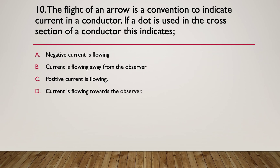Question ten. The flight of an arrow is a convention to indicate current in a conductor. If a dot is used in the cross section of a conductor, what does this indicate? A, negative current is flowing. B, current is flowing away from the observer. C, positive current is flowing. Or D, current is flowing towards the observer. Pause here. Here's the hint. The arrow is an analogy for current. If you think about it, what does it mean if we can see the dot of the arrow?